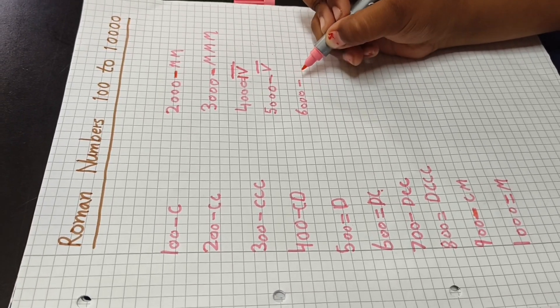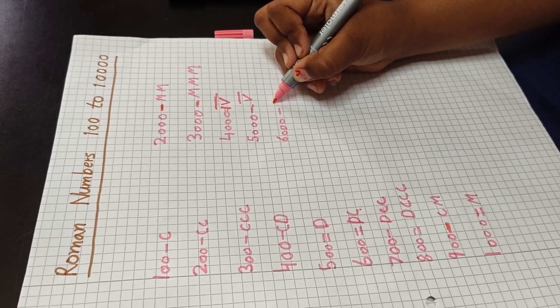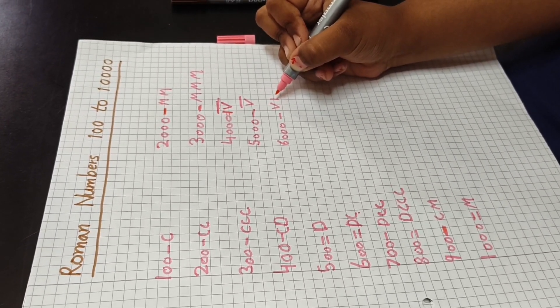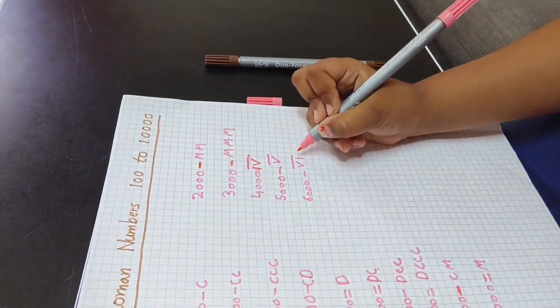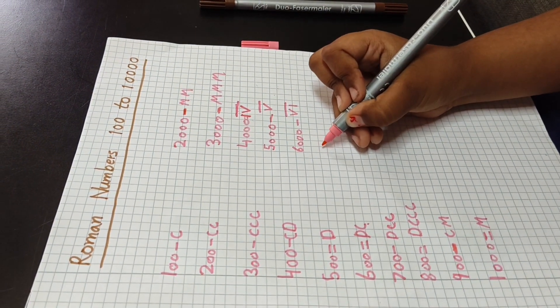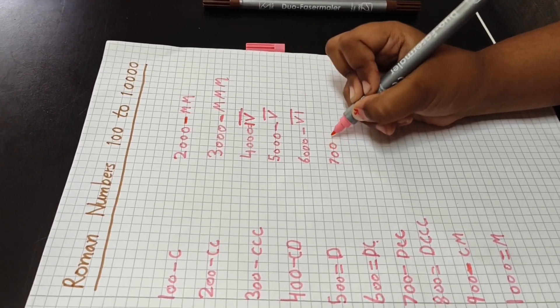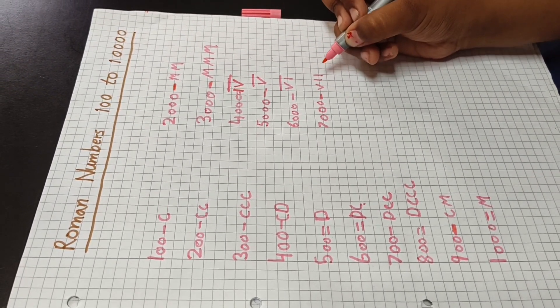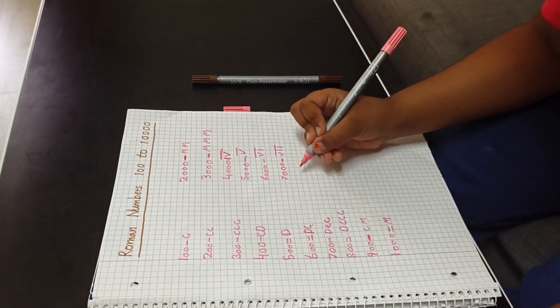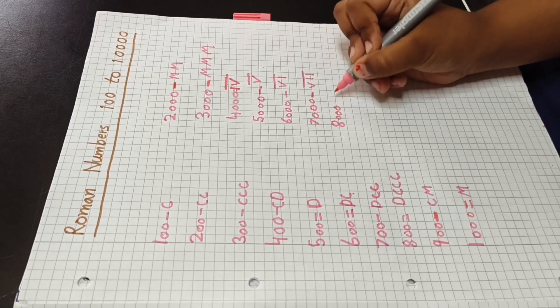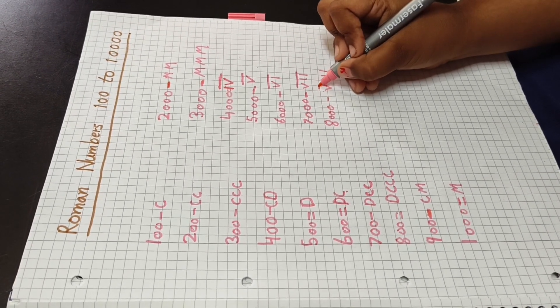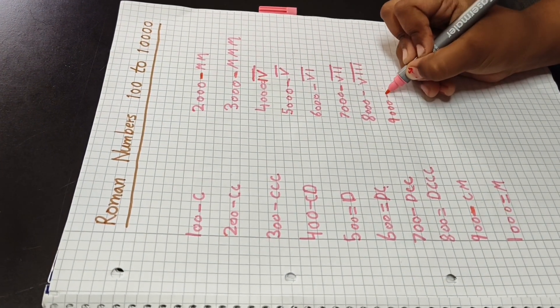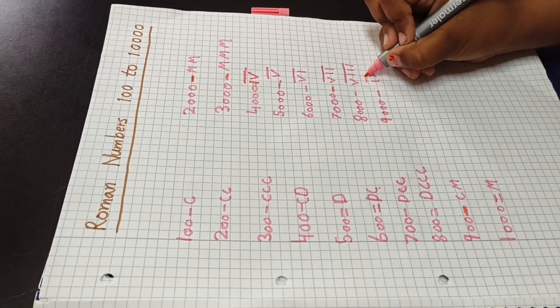Six thousand — it's VI with a line on the upper position. Seven thousand — it's VII with a line on the upper position. Eight thousand — VIII with a line on top. Nine thousand — VIIII with a line, and ten thousand — IX with a line on the upper position.